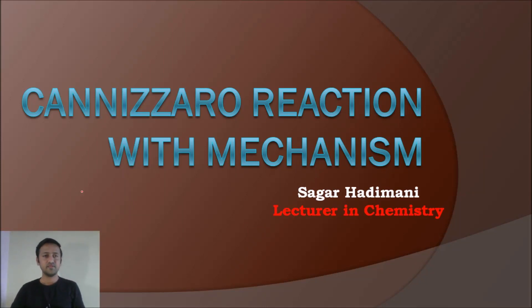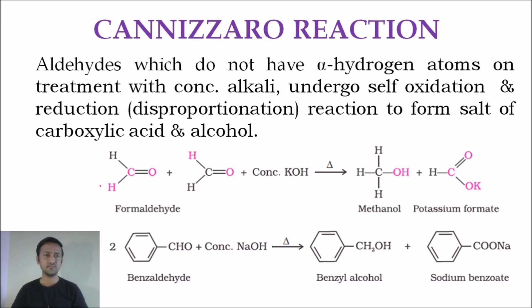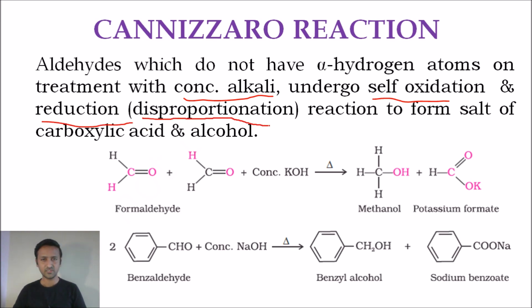In this session I am taking a named reaction called the Cannizzaro reaction with its mechanism. In the Cannizzaro reaction, aldehydes which do not have any alpha hydrogen atoms react with concentrated alkali — such as sodium hydroxide or potassium hydroxide — and undergo self-oxidation and reduction, also called a disproportionation reaction, to form a salt of carboxylic acid and alcohol.